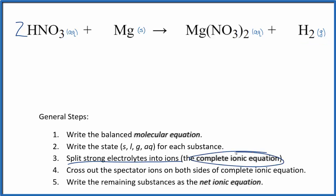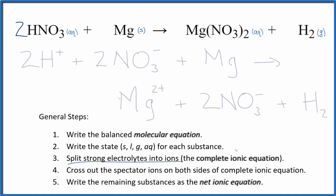Now we can split the strong electrolytes into their ions. That'll give us the complete ionic equation. That looks like this. Note that hydrogen, because that's a gas, we didn't split that apart into its ions.